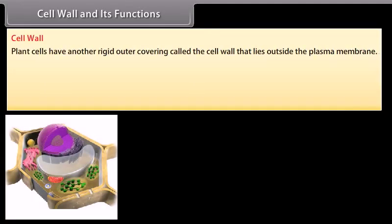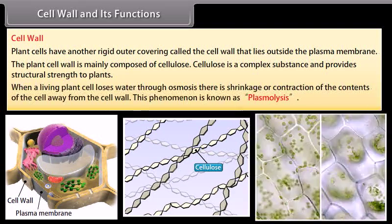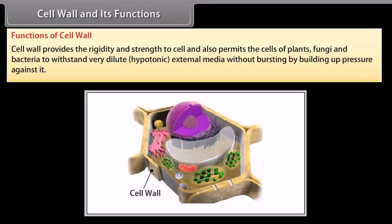Cell wall and its functions: Plant cells have another rigid outer covering called the cell wall that lies outside the plasma membrane. The plant cell wall is mainly composed of cellulose, a complex substance that provides structural strength to plants. When a living plant cell loses water through osmosis there is shrinkage or contraction of the contents of the cell away from the cell wall — this phenomenon is known as plasmolysis. The cell wall provides rigidity and strength to the cell and permits the cells of plants, fungi, and bacteria to withstand very dilute hypotonic external media without bursting.